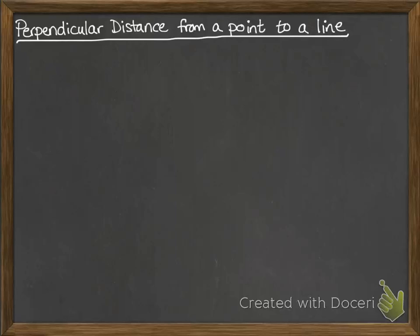Right, the perpendicular distance from a point to a line. So we have this line with the vector equation, we have a point P, and we're looking for the distance from P to the line.